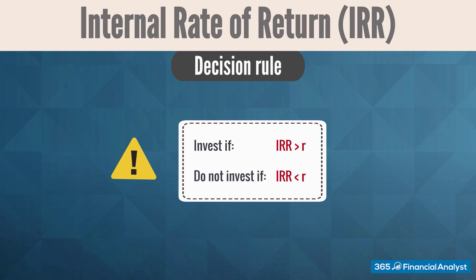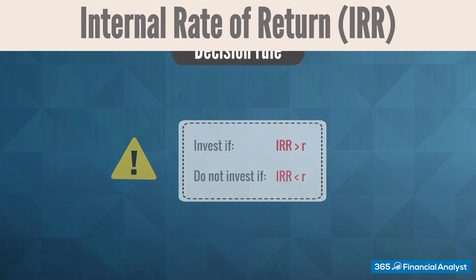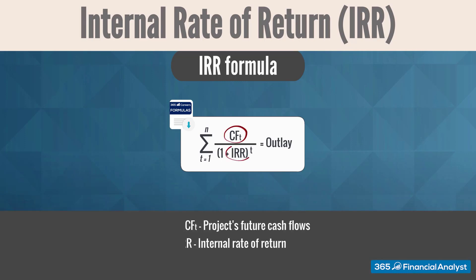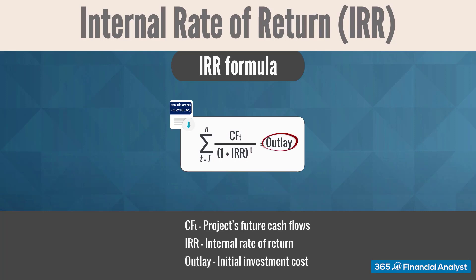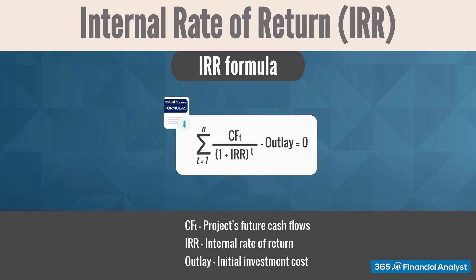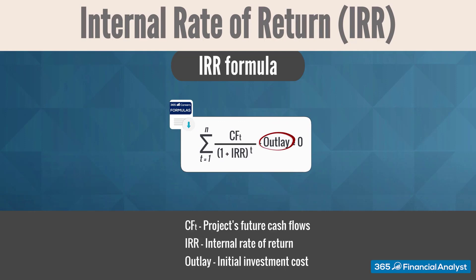Now that we know how to interpret the internal rate of return, it's time to express its formula algebraically. For a project with one investment outflow made initially, on the left side of the equation we have the sum of all cash flows discounted at the IRR, and on the right side we have the initial investment outlay. Let's rearrange the equation a little bit — we move the initial outlay to the left side, and now it looks like the NPV formula.